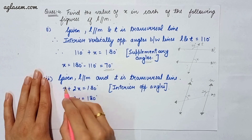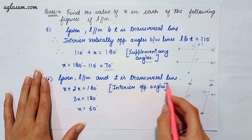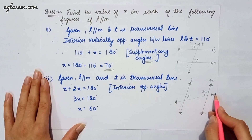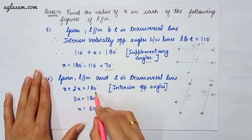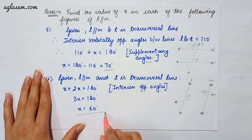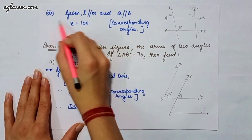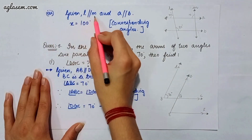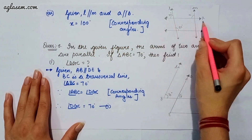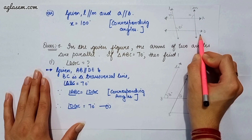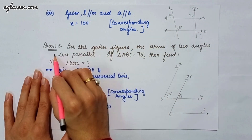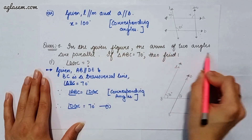For the second part, L is parallel to M and T is a transversal. Here x plus 2x equals 180 by co-interior angles, so x equals 60 degrees. For the third part, given L parallel to M and A parallel to B, x equals 100 degrees by corresponding angles.